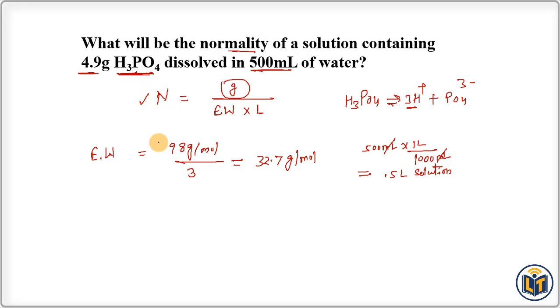Now we can plug in the values in this formula. Here we have normality of solution is equal to mass of solute, 4.9 grams, divided by equivalent weight which we have calculated, 32.7, multiplied by volume of solution, 0.5 liters. Now you can do the calculation: at the top we have 4.9, at the bottom we have these values, you can multiply, the value you will get is 16.35. Now you can divide these values, you will get 0.30. This is the normality of the solution. You can see how I calculated normality of solution. Important part is equivalent weight. Once you calculate equivalent weight, then you can plug in the values in this formula and calculate normality of the solution.